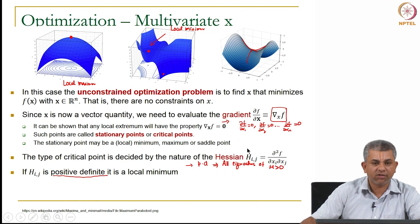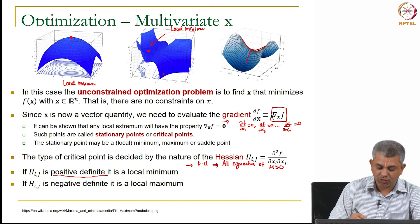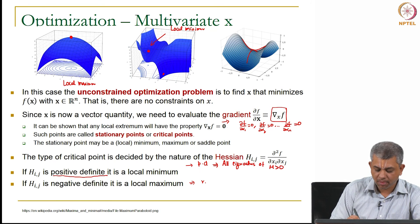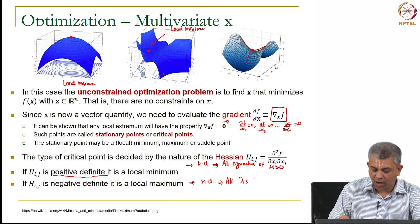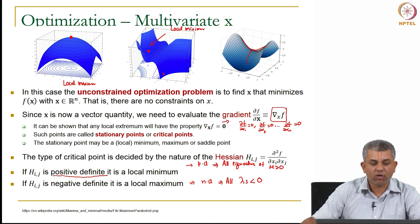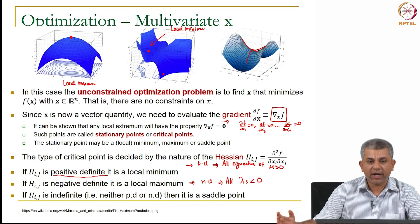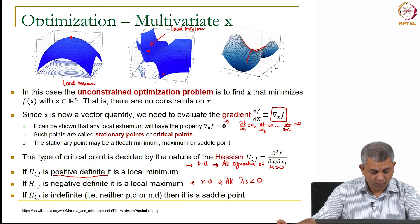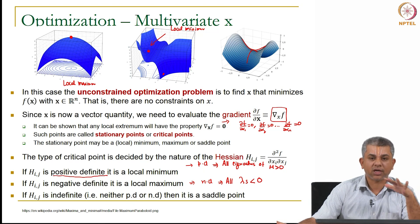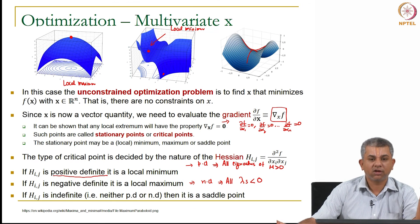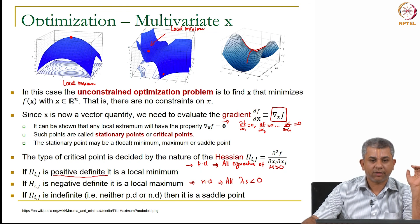So if the Hessian is positive definite, then it is a local minimum. If the Hessian is negative definite, which would mean all eigenvalues are less than 0, then it is a local maximum. And if the matrix is indefinite, what is meant to be indefinite? It is neither positive definite nor negative definite. So some eigenvalues are positive, some may be negative or some even if they are 0, then it is a saddle point.